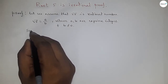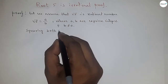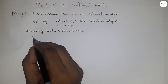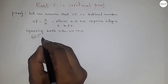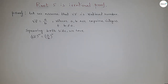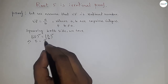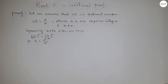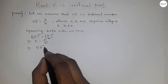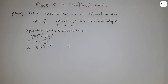Now squaring both sides of the above relation √5 = a/b, we get 5 = a²/b². Cross-multiplying gives us 5b² = a². This is relation number 1. So we can also write b² = a²/5.